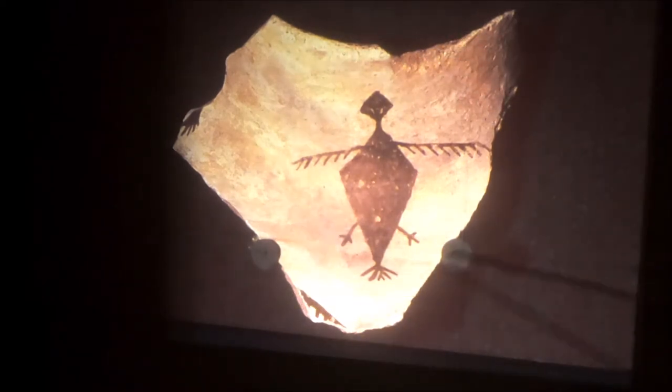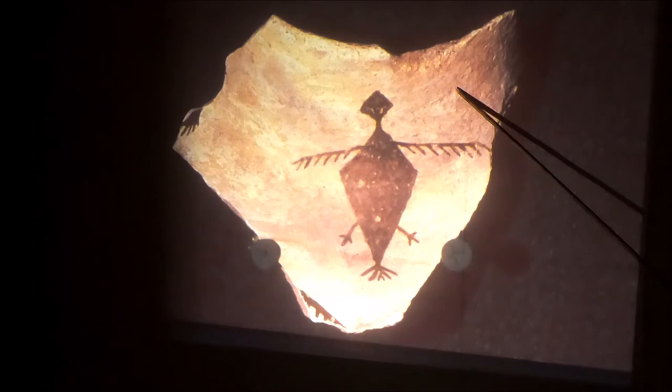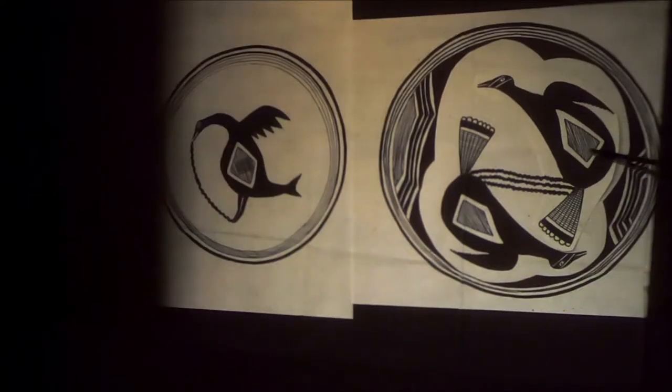There's a turkey on the rim of an olla. This is a large pottery sherd. We often find turkeys on different forms of pottery. This is actually a white mountain redwood. This is probably a Tularosa black on white, dating between 1200 and 1300 AD. Nice turkey.